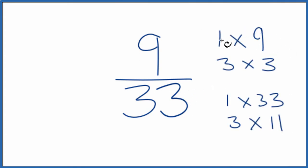And you can see the common factor for 9 and 33, that is 3. So we divide 9 by 3, 33 by 3, and we'll have simplified 9 over 33.